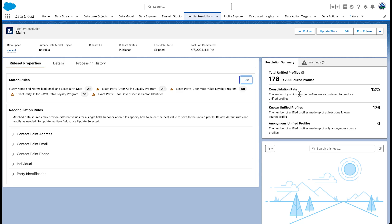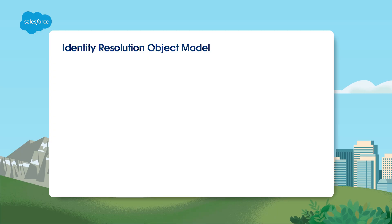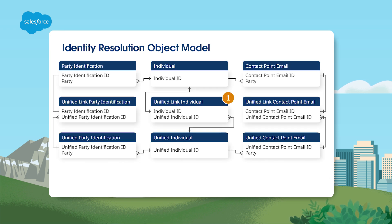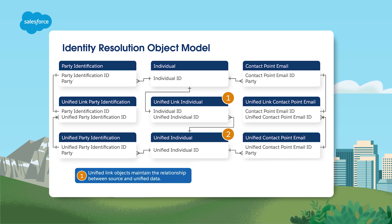Once the rule set processing completes, you'll be able to see a summary outlining the counts of sources and matched individuals, as well as the total number of unified profiles created. Defining criteria guides the matching process — if you want more accuracy, add more criteria; if you want more matches, reduce the number of criteria. Identity resolution creates unified accounts and unified individual objects to store unified profile data. Unified link objects establish the relationships between the source data and our unified profile data.